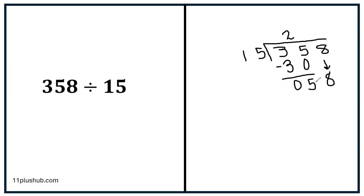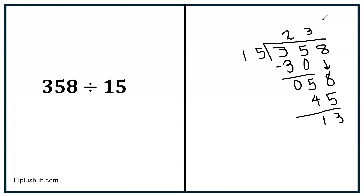How many times does 15 go into 58? 15, 30, 45 — we have to stop there. So it goes in 3 times and we landed on 45. So that number needs to come down, we need to take it away from the 58. So 8 subtract 5 is 3, 5 subtract 4 is 1. Now we've got no more numbers to bring down. We've got 13 at the bottom — this is our remainder. So the answer is 23 remainder 13.